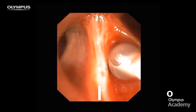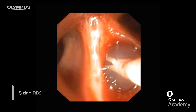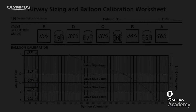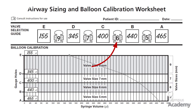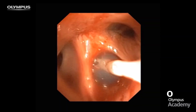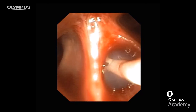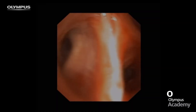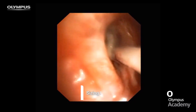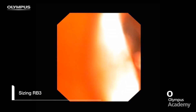I then measure RB2, which looks a little smaller, so I inflate the balloon to the upper limit of a size 6 valve, which is 400 microlitres — this fits perfectly. Next I measure segment RB3 and determine this to be a size 7 airway.